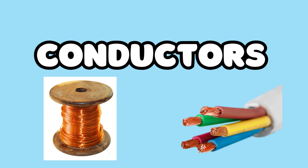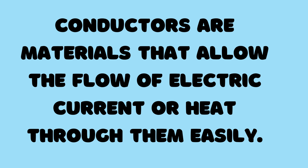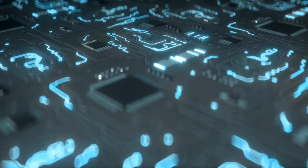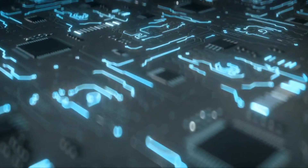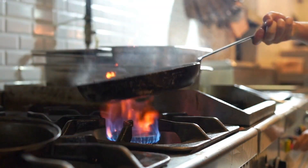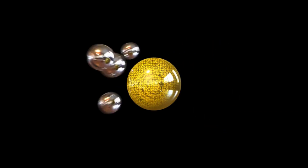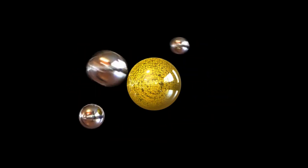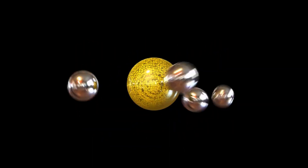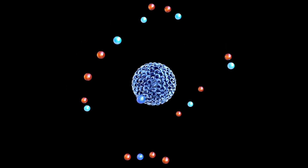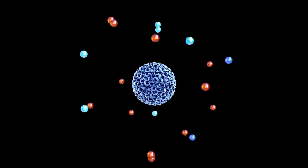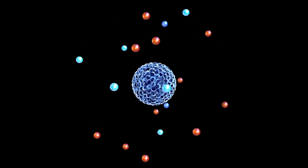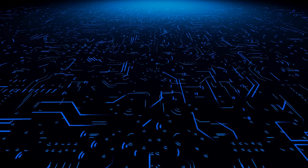What are conductors? Conductors are materials that allow the flow of electric current or heat through them easily. Conductors have free electrons that can move easily within the material. These free electrons help transfer electrical energy or heat quickly.